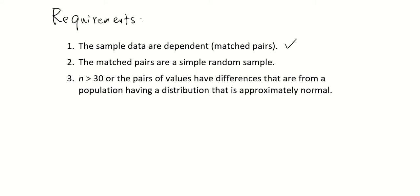The third requirement is either n is greater than 30, where n means the number of pairs, or the pairs of values have differences that are from a population with normal distribution.